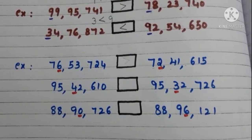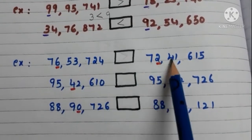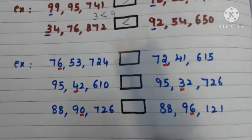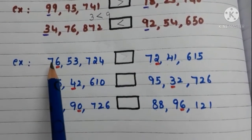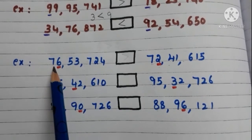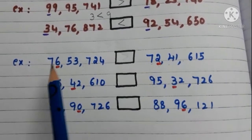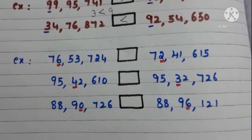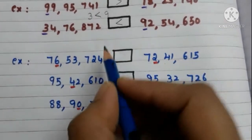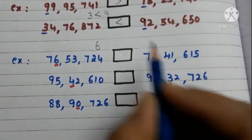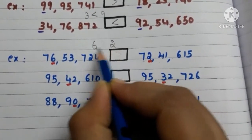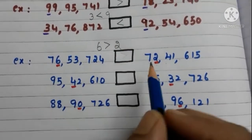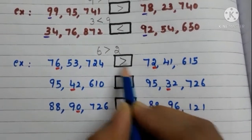Now let us do some more examples. Here we have 2 numbers and the digits in these 2 numbers are equal. So compare the highest place value digit. Here 7 is there, and here also 7 is there. Both are equal. So go to the next highest place value digit. Here 6 is there, here 2 is there. Compare 6 and 2 — 6 is greater than 2. So this number is greater than this number.